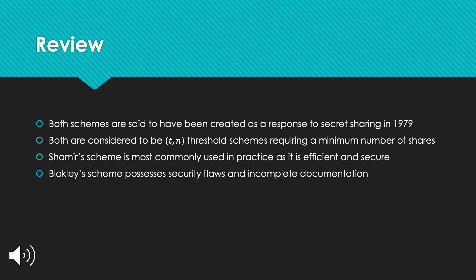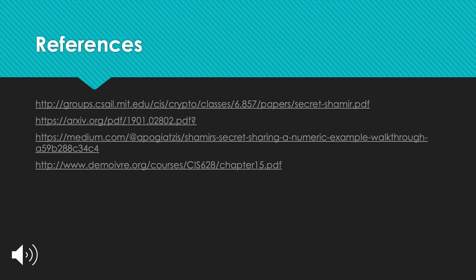To review, both Blakely's and Shamir's schemes are said to have been created as a response to secret sharing needs in 1979, and both are considered T-of-N threshold schemes requiring a minimum number of shares to reconstruct the secret. Shamir's scheme is most commonly used in practice and is both efficient and secure. Blakely's scheme possesses security flaws and incomplete documentation, rendering it difficult to use in practice. The following are the references used for this presentation.